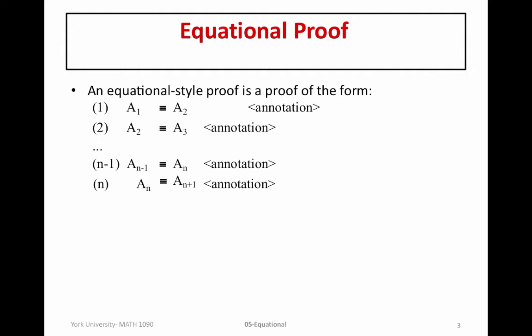So let's have a look at what we mean by an Equational Style Proof. An Equational Style Proof is a proof that consists of simply a series of equivalences. So this is an Equational Style Proof in Hilbert form. It just simply has at each step of the Hilbert proof an equivalence.